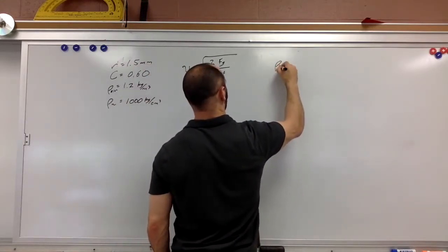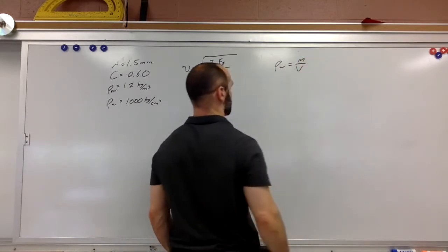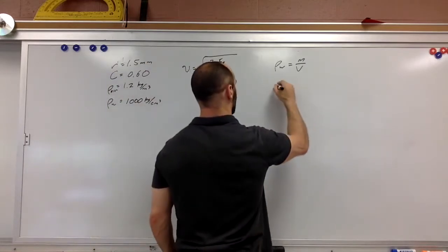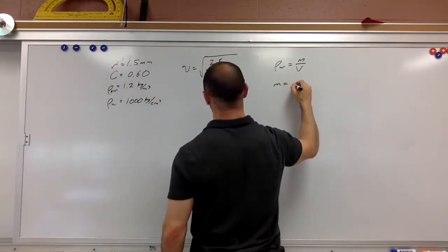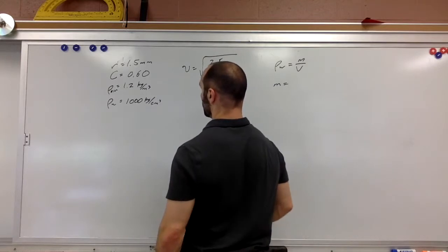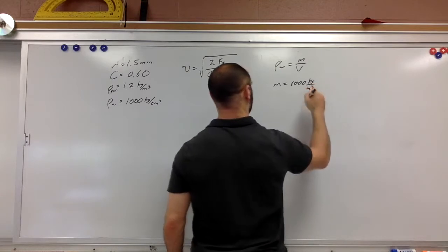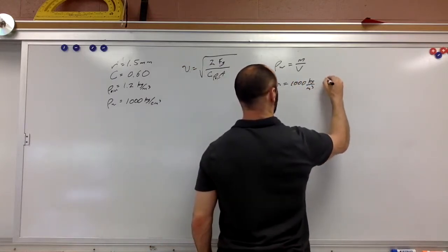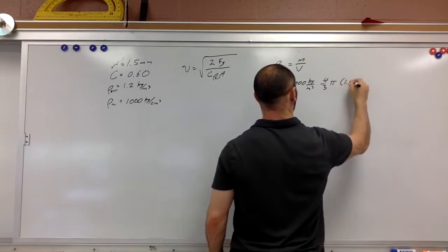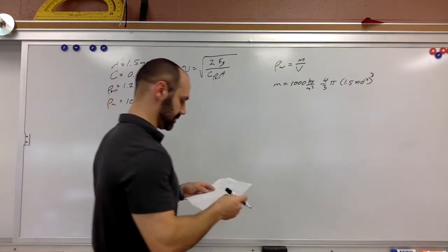So I know that rho of water is equal to the mass per volume and I know the volume of this thing, the volume I can calculate from R. So M is equal to rho which is 1,000 kilograms per cubic meter and the volume of this drop is four-thirds pi r cubed and R is 1.5 times 10 to the negative third so we're going to cube that.